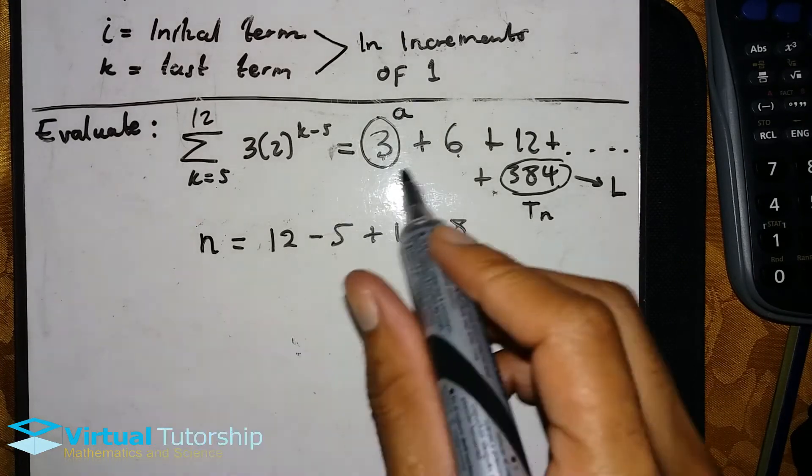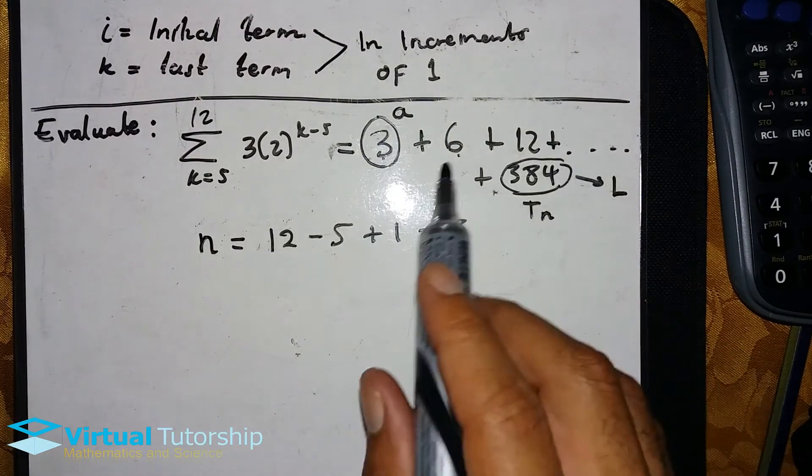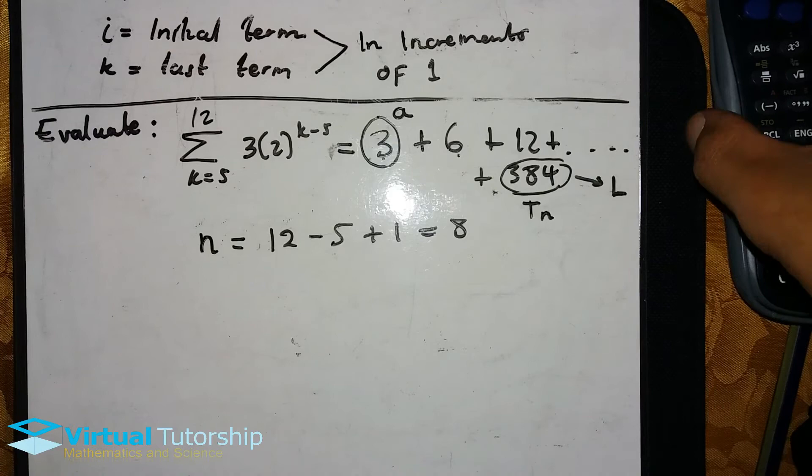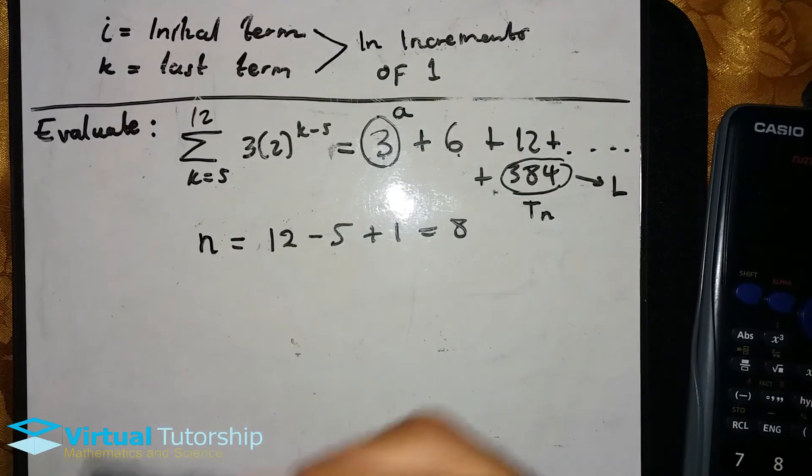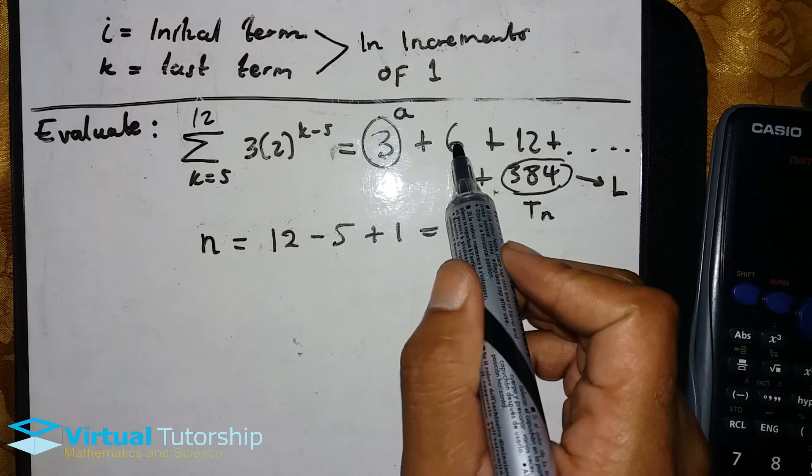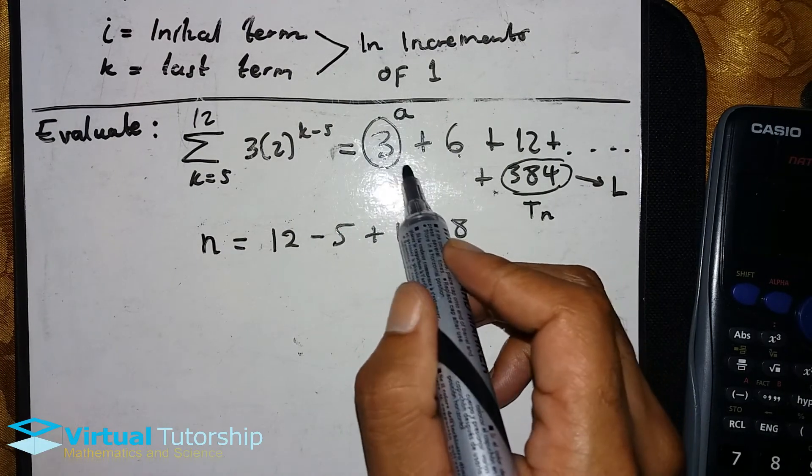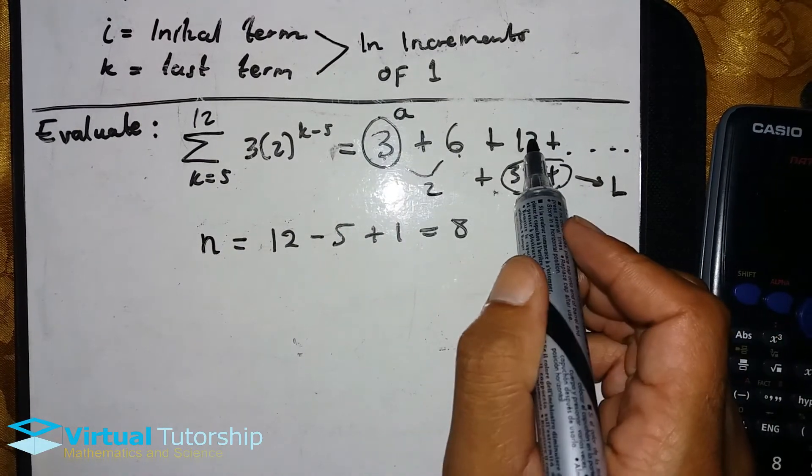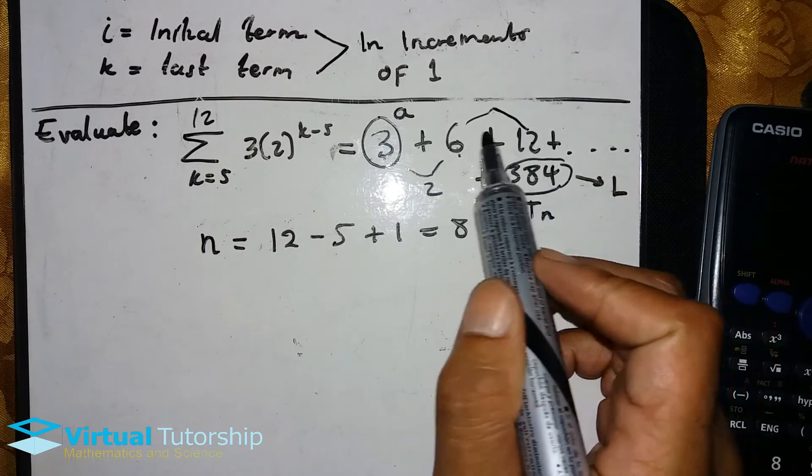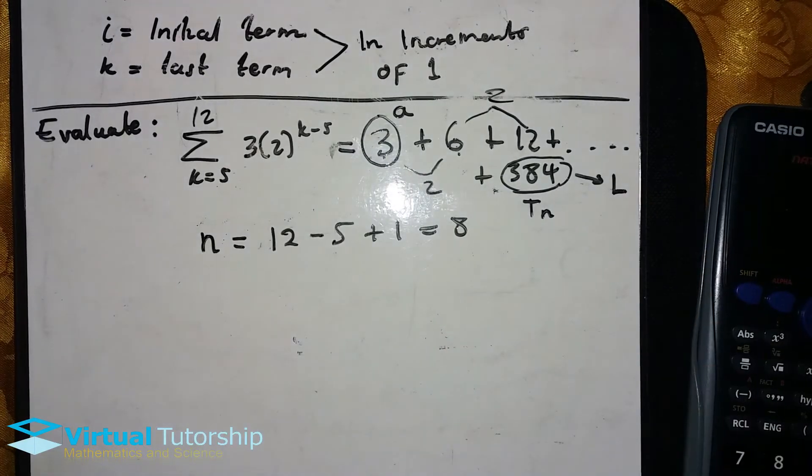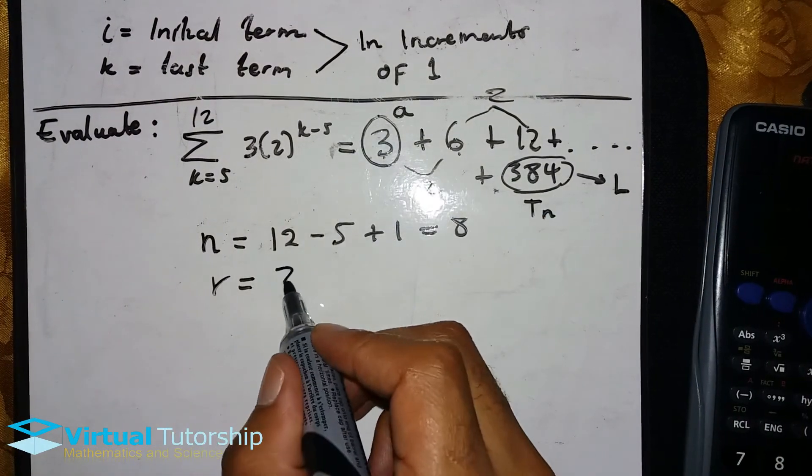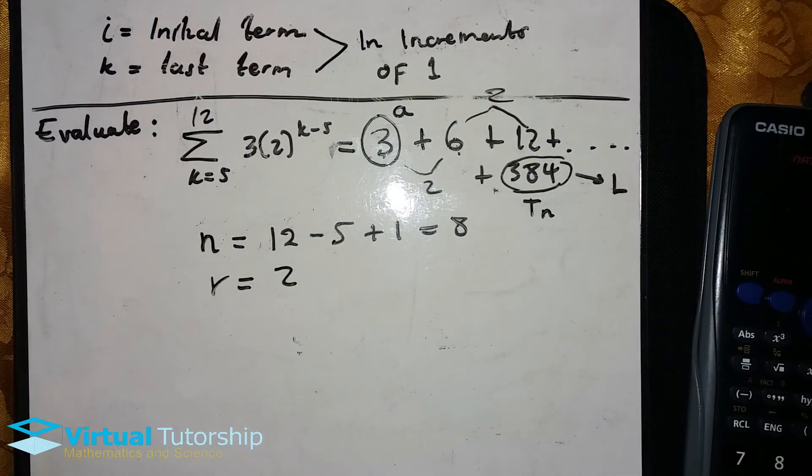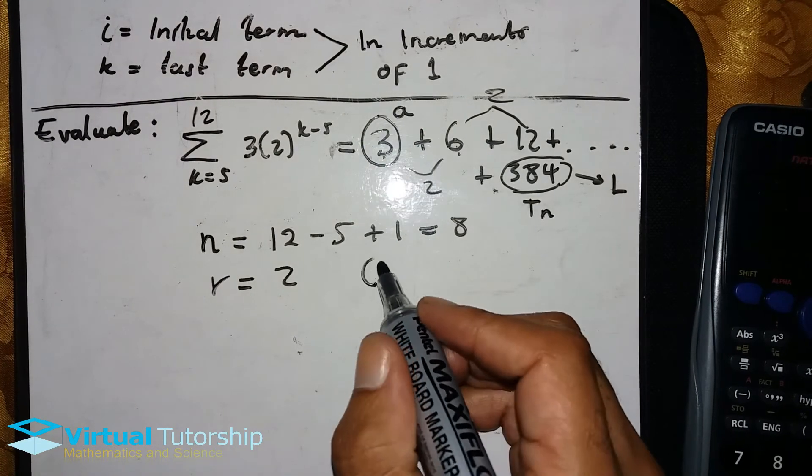So is this series arithmetic or geometric? Let's test it. T2 divided by T1 is 6 divided by 3, which is 2. T3 divided by T2 is 12 divided by 6, which is 2. So we know we have a geometric series. So r value is 2, and r is greater than 1.